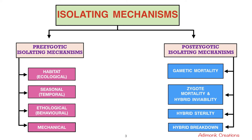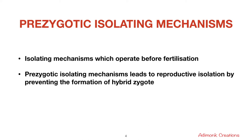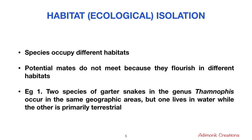Pre-zygotic isolating mechanisms are those which operate before fertilization — that is, before the formation of the zygote. Pre-zygotic isolating mechanisms lead to reproductive isolation by preventing the formation of a hybrid zygote, so the hybrid zygote itself is not formed. The first type is habitat or ecological isolation.